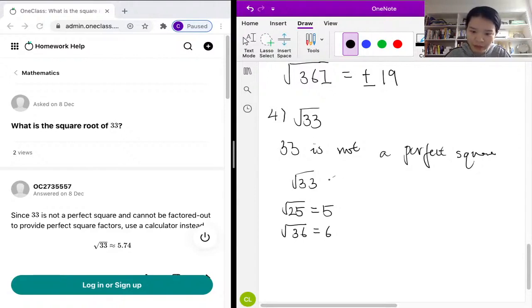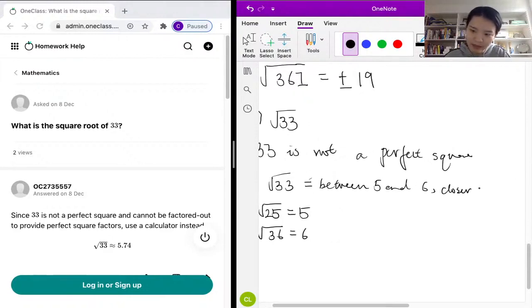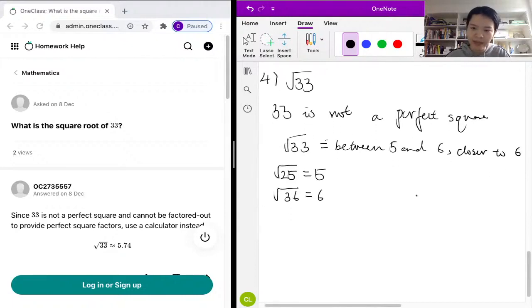So we know the square root of 33 is between 5 and 6, but it's more towards 6 than towards 5, so it's closer to 6.